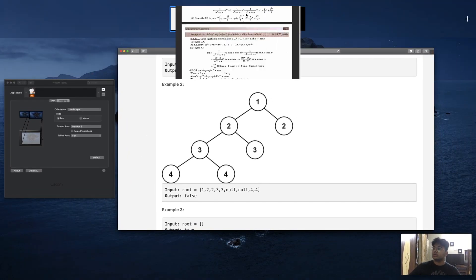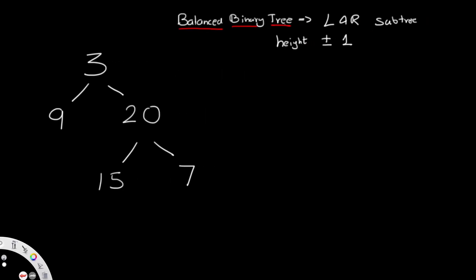Now let's see how to solve this. We're going to use a recursive approach and traverse the binary tree using a post-order traversal — where we first go to the left node, then the right node, and then the root node.